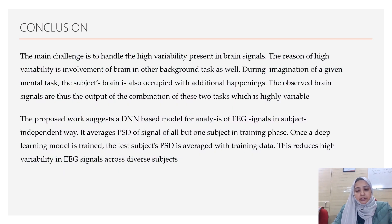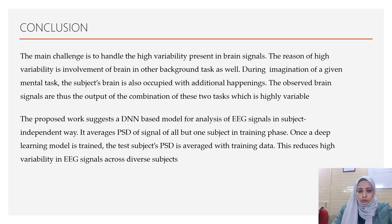The conclusion drawn from this research is that the main challenge in EEG signal analysis is handling the high variability present in brain signals. This variability arises because when a subject imagines a mental task, the brain also gets involved in other tasks simultaneously. The proposed work suggests a GNN-based model for subject independent EEG signal analysis that averages the PSD values and feeds them into a deep learning model, reducing the high variability in the EEG signal. This work was published in a journal with a good impact factor.